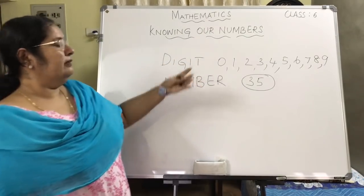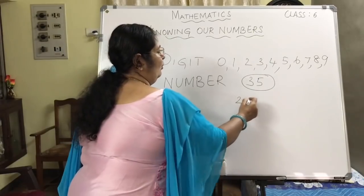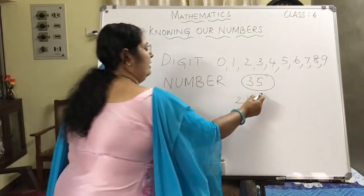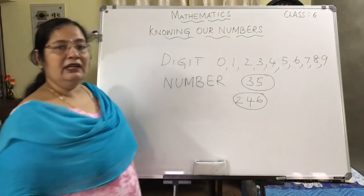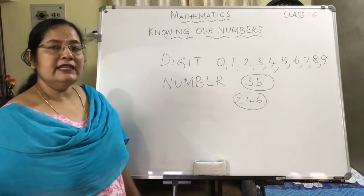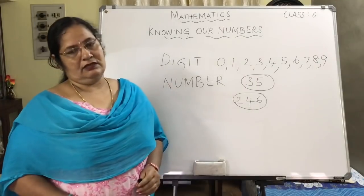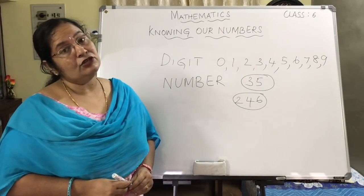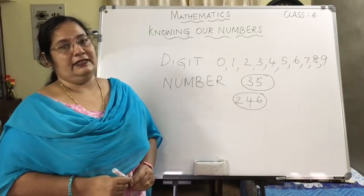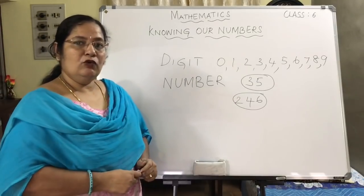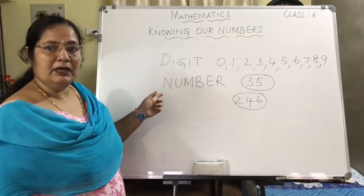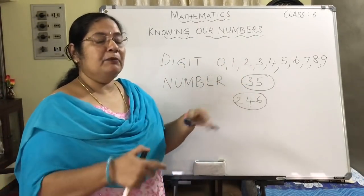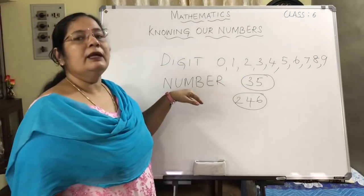Another example: if you take the digits 2, 4 and 6, then you get the number 246. You will not say digit 2, digit 4, digit 6 — you will call it as number 246. So is it clear what are digits and what is a number? Digits are 0 to 9, and digits are put together to form numbers.